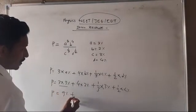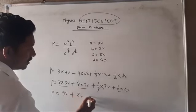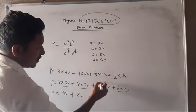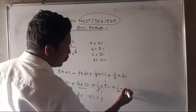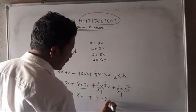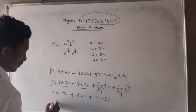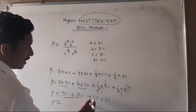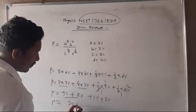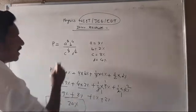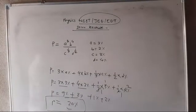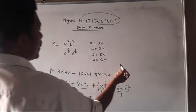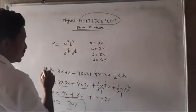P equals 3 into percentage of A, plus 4 into percentage of B, plus 1 by 3 into percentage of C, plus 1 by 2 into percentage of D. Computing: 9% plus 8% plus some values — the total error comes out to be 20%.